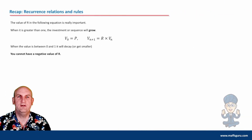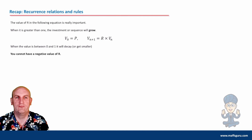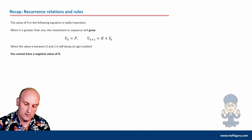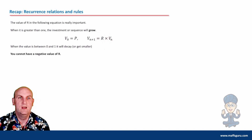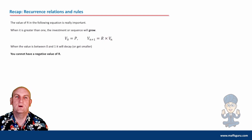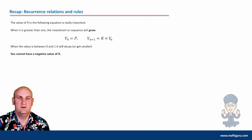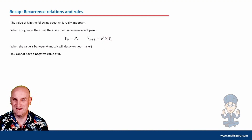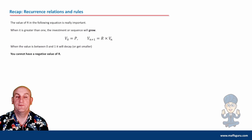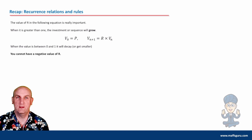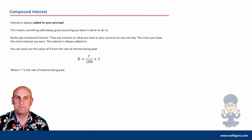On recurrence relations and rules, the value of R is really important. When it's greater than 1, the investment will grow. When the value is between 0 and 1, it will decay. These notes are for your summary book if you want to print them off and stick them in.